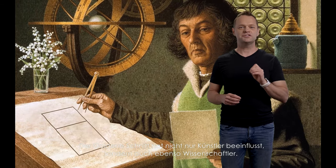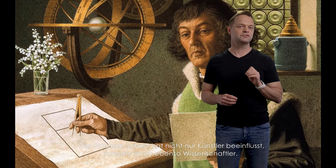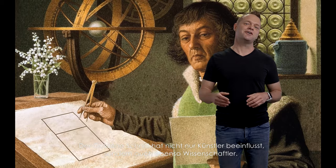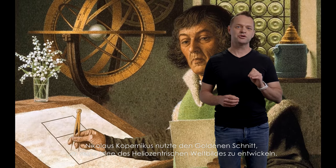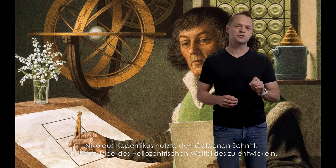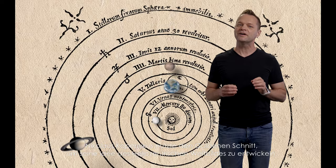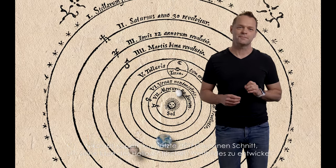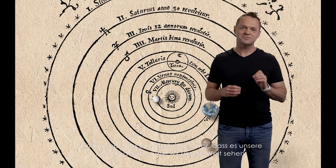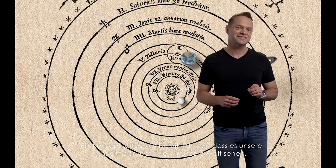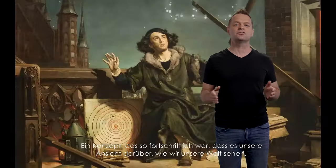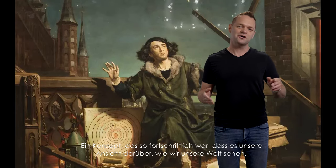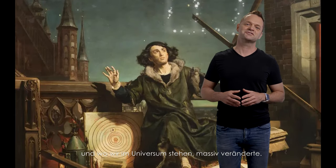The golden ratio didn't just influence artists, but scientists as well. Nicholas Copernicus used the golden ratio to form his idea of heliocentrism — a concept so advanced it literally changed the way we saw our world and, of course, where it was in the universe.